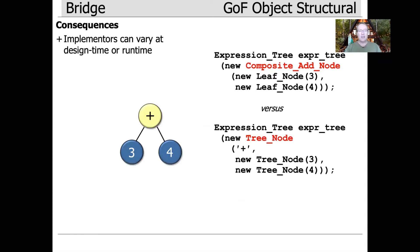Another nice thing about this pattern is you can vary the implementations at design time or even at runtime. You can decide whether to use one implementation versus another very late in the design cycle — for example, when an object is created, you can give it the implementation at that point. You could also make changes at runtime, but that gets a bit beyond the scope of the bridge pattern; we'll talk about some other patterns later that can help with that.